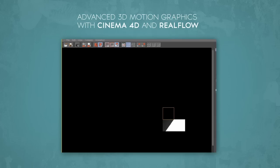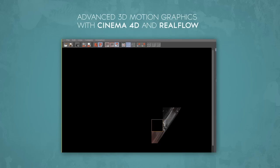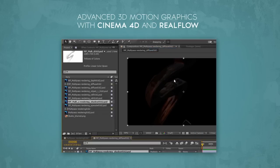Then we will go through the process of preparing our scene for final render. We'll learn how to set up our cameras, depth of field, and other passes. We also talk about render settings and what you are required to do before going for final render, as well as the process of complete multi-pass rendering in Cinema 4D and After Effects.